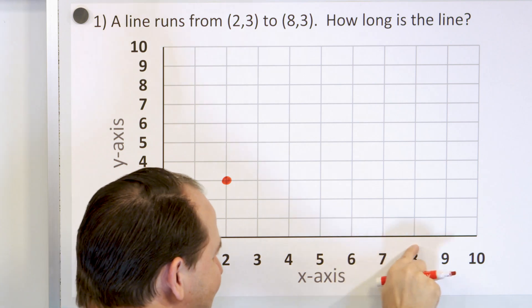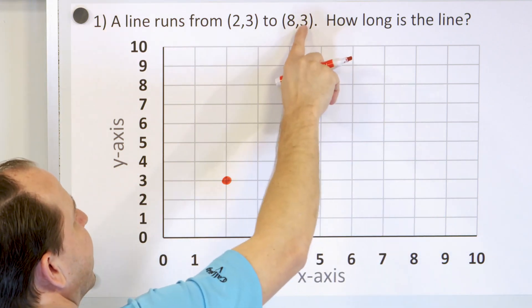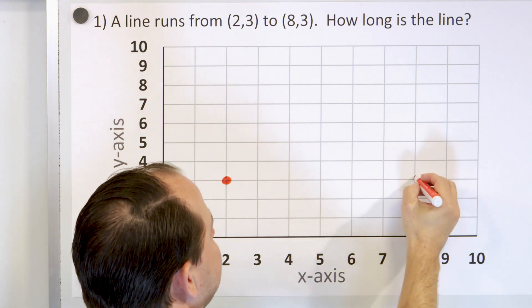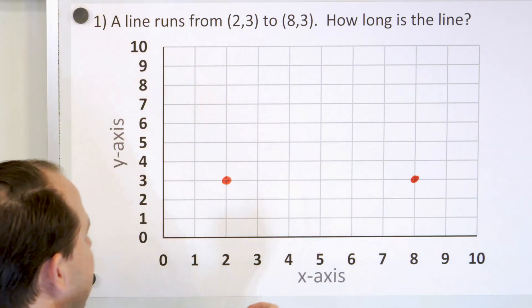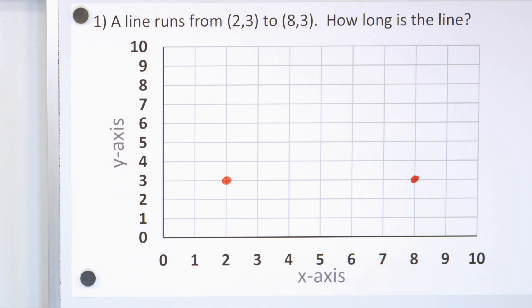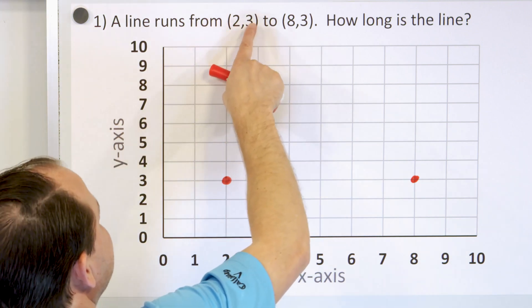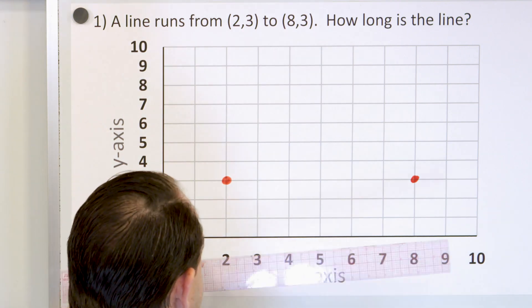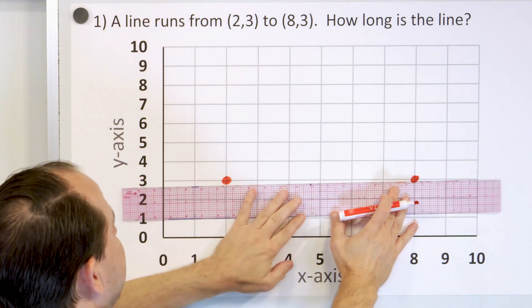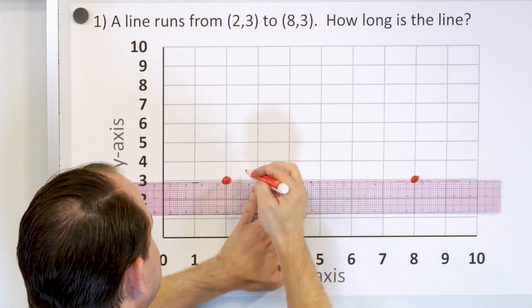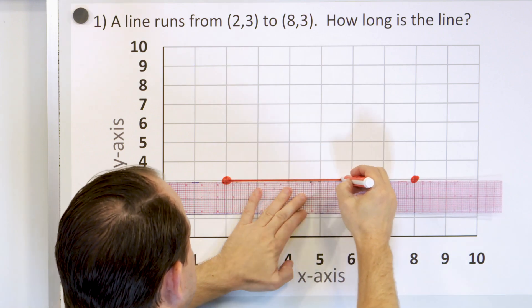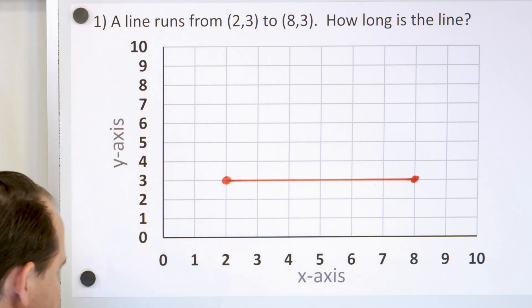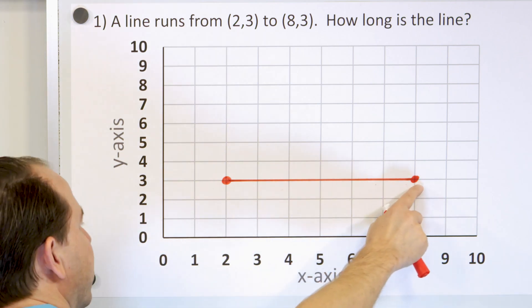X is 8. So we go to X equal to 8, and then we go up three units for Y — 1, 2, 3. Y is equal to 3 and X is equal to 8. Here is the end point of the line. So we have now two points of the line. The line runs from this point to this point. We've drawn those points, and now we want to actually draw a line between these points. Let's draw this line as straight as we can from end point to end point.